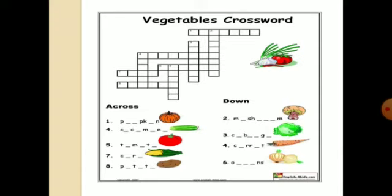Now for general information — a vegetables crossword. The across and down hints are here. You are going to use these hints and try it out.